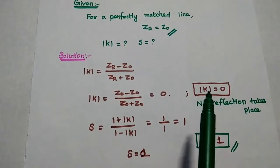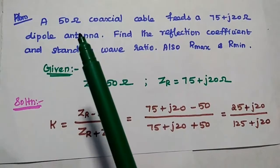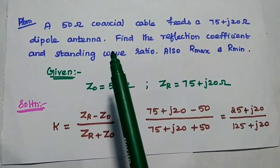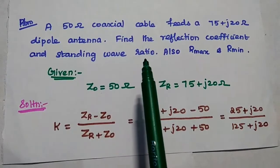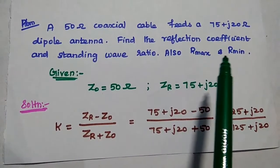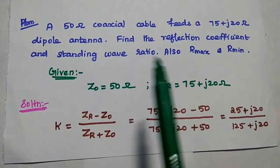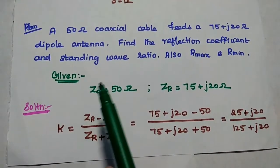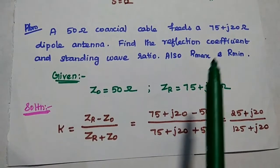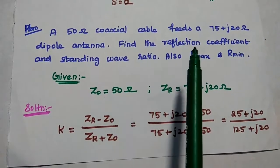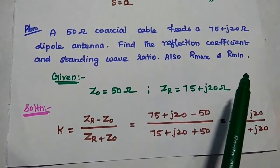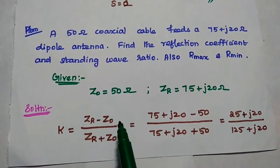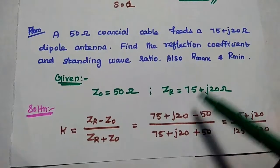For a perfectly matched line, K value is 0 and S value is 1. Next problem: A 50 ohm coaxial cable feeds a 75 plus J20 ohm dipole antenna. Find the reflection coefficient and standing wave ratio. Also find the maximum impedance and minimum impedance for the given cable. Given data: Z0 equals 50 ohm (characteristic impedance), ZR equals 75 plus J20 ohm. We have to find the reflection coefficient, standing wave ratio, Rmax, and Rmin. K is equal to ZR minus Z0 divided by ZR plus Z0.